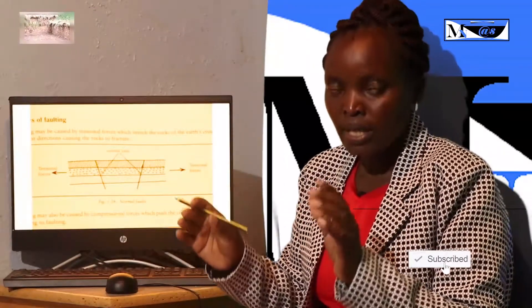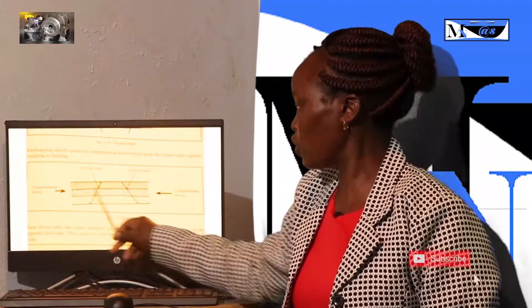The crustal rocks may be subjected to tensional forces. When tensional forces are applied to a block of crustal rocks, they cause the rocks to crack. The kind of crack that they form is what we call a normal fault. A normal fault is caused by tensional forces. The second cause of cracks is compressional forces, which lead to the formation of reversed faults.